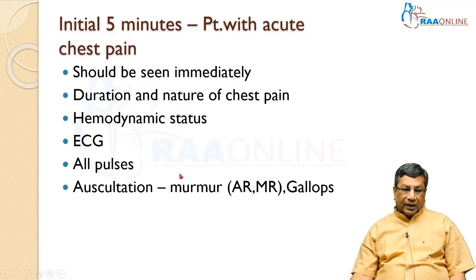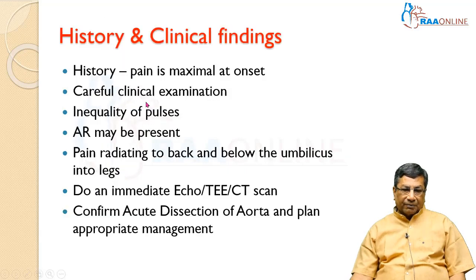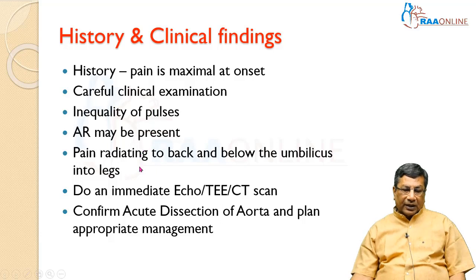In all acute chest pain patients, feel all pulses and always auscultate for acute AR or MR and gallops. Focused history and focused clinical examination, then immediate ECG — this is the initial five minutes. If the pain is maximal at onset it is likely to be dissection, whereas pain in ischemic conditions will gradually build up. Careful clinical examination: inequality of pulses, AR, pain radiating to the back, and pain below the umbilicus — ischemic pain never radiates below the umbilicus.